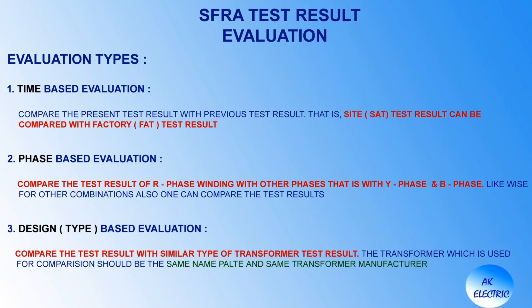SFRA test result evaluation can be done by three types: time-based evaluation, phase-based evaluation, and design-based evaluation. Time-based evaluation compares the present test result with a previous test result — for example, site test result compared with factory test result. Phase-based evaluation compares the test result of R-phase winding with other phases — Y-phase and blue-phase — and other combinations. Design-based evaluation compares the test result with a similar type of transformer, which must have the same nameplate ratings and same manufacturer.